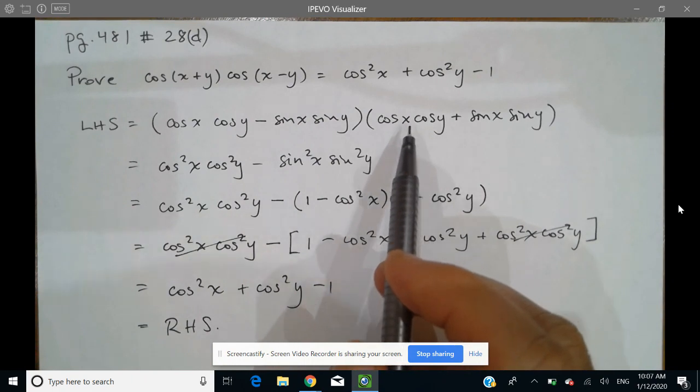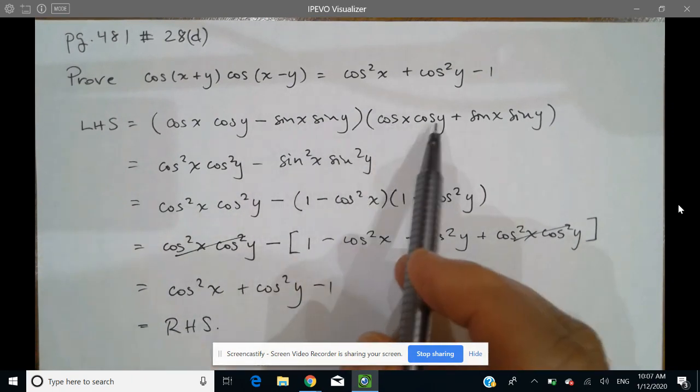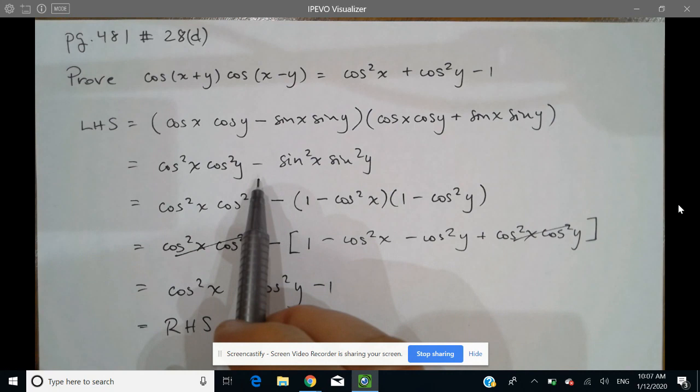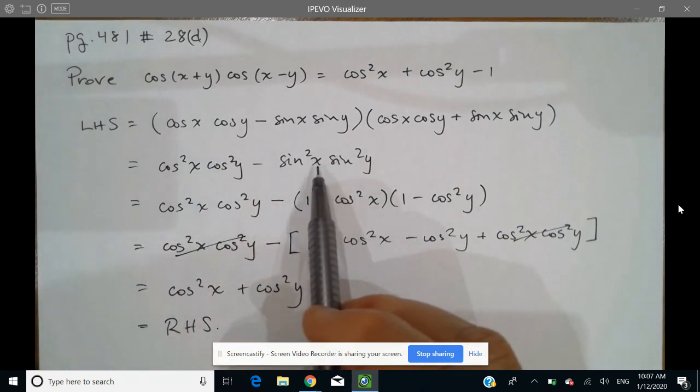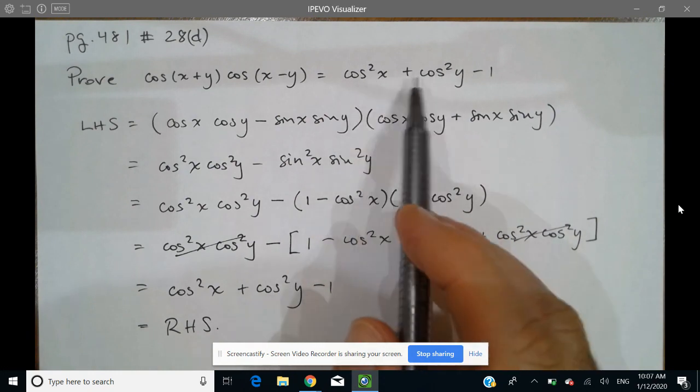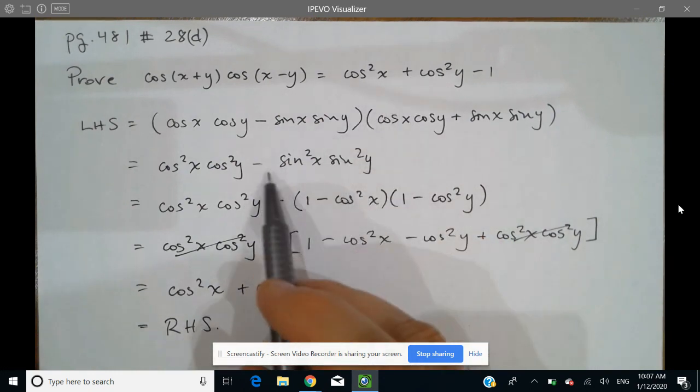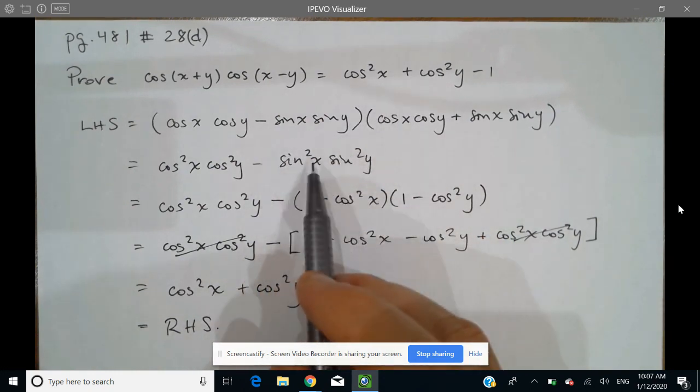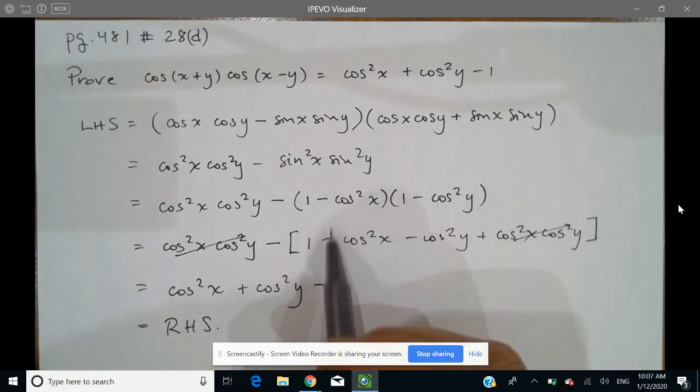I save myself a lot of time by noticing that this is going to produce a difference of squares. And then finally, I notice that the right-hand side has no sine expressions. So that's why I use my Pythagorean identity to change these into cosine expressions. And then the rest is just about being careful with the algebra. That's it for this one.